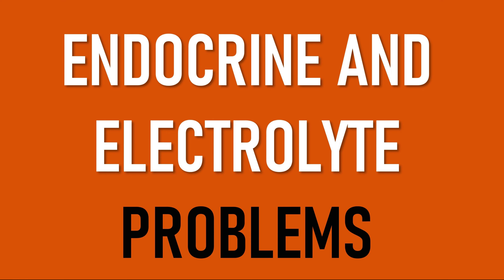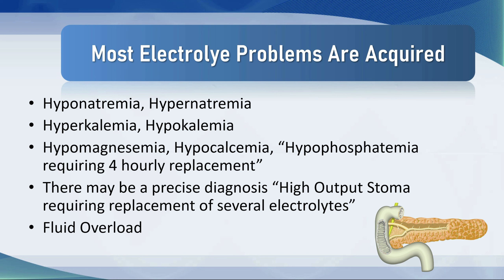Endocrine and electrolyte problems. Most electrolyte problems in critical care are acquired. They're part of the problem list. These are dysnatremias: hyponatremia, which is rarely acquired in the ICU, and hypernatremia, which is commonly acquired. Hyperkalemia, hypokalemia — seen all the time. Hypomagnesemia, hypocalcemia. Hypophosphatemia requiring four-hourly replacement. There may be a precise diagnosis: this patient has multiple electrolyte abnormalities being caused by a high-output stoma. The other major electrolyte and fluid problem is fluid overload. It's important to say the patient is fluid overloaded, and I would always qualify that. I would say this patient has a positive balance of six litres over the past six days — if you say positive balance of six litres and they've been in the ICU for 40 days, that really isn't fluid overload in the same sense.